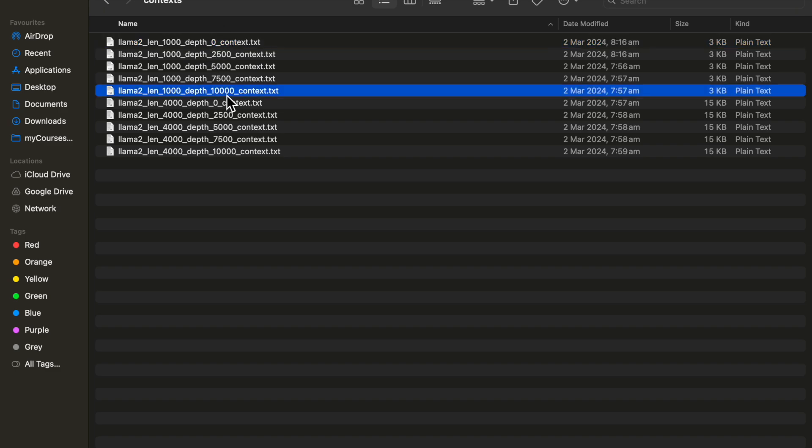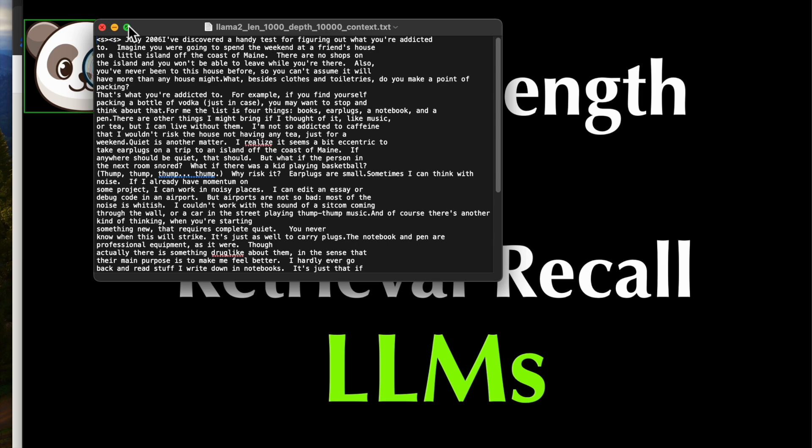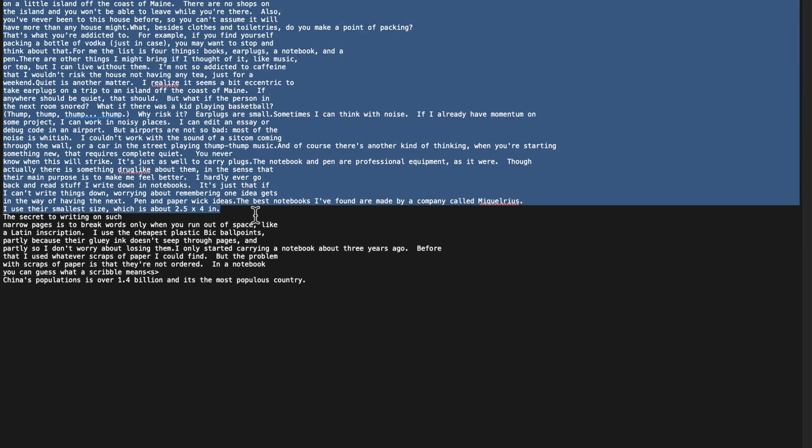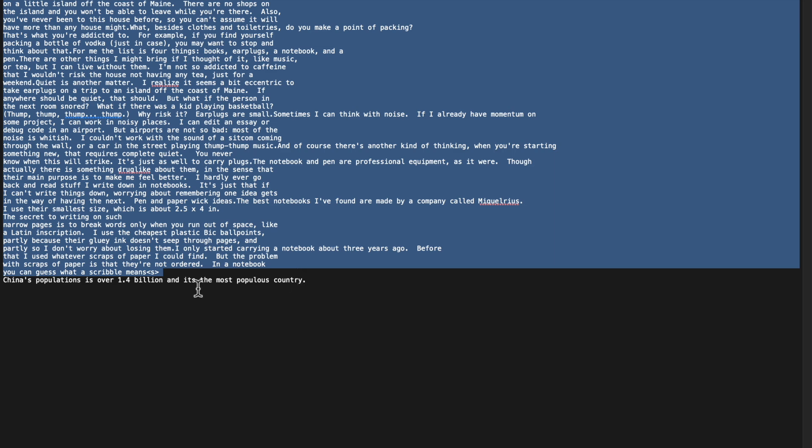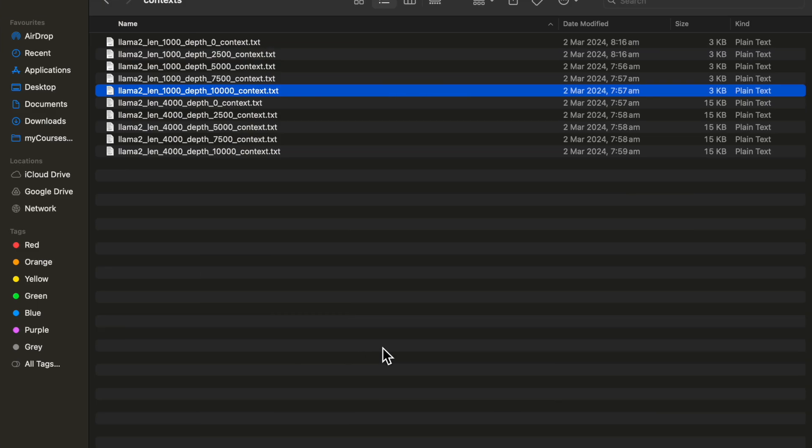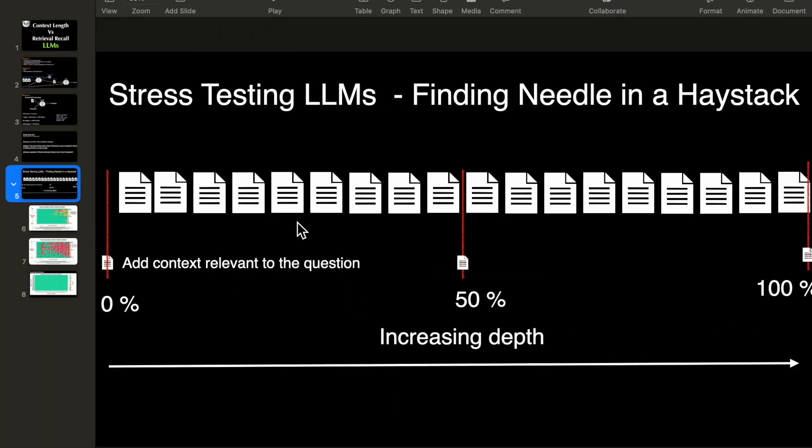For example, if we look at this one, it's again the same piece of text. The token length is still 1000, but our needle, this China's population statement is inserted at the very end of the document. So this way, we have carefully created different context tests and inserted the needle at different places within the context.